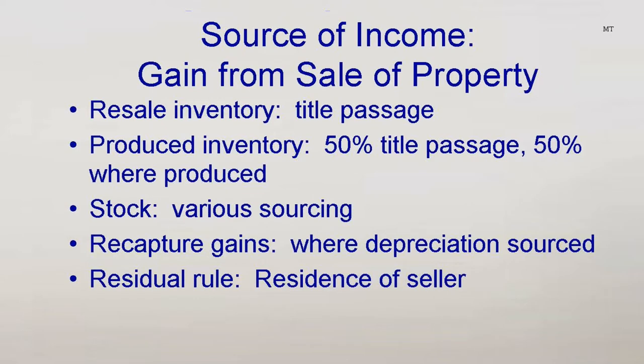A taxpayer may recognize gain on selling an asset for which he claimed depreciation deductions. Under regular rules, any gain considered recapture of the depreciation to the extent the depreciation deduction was allowed. That gain is sourced based on the source of the income that was reduced by the previous depreciation deduction.